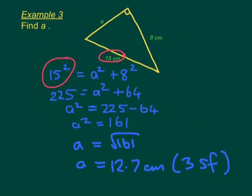So this example was slightly different to the first two examples, because in this one they actually gave us the hypotenuse and we were looking for one of the shorter sides.